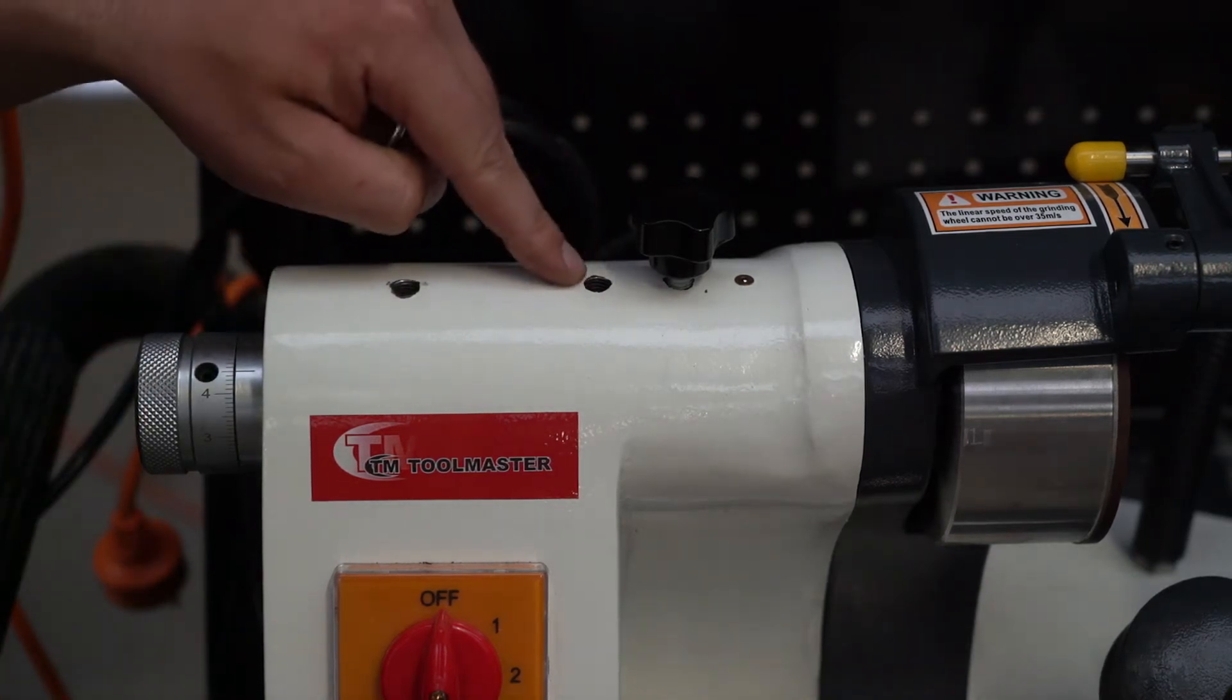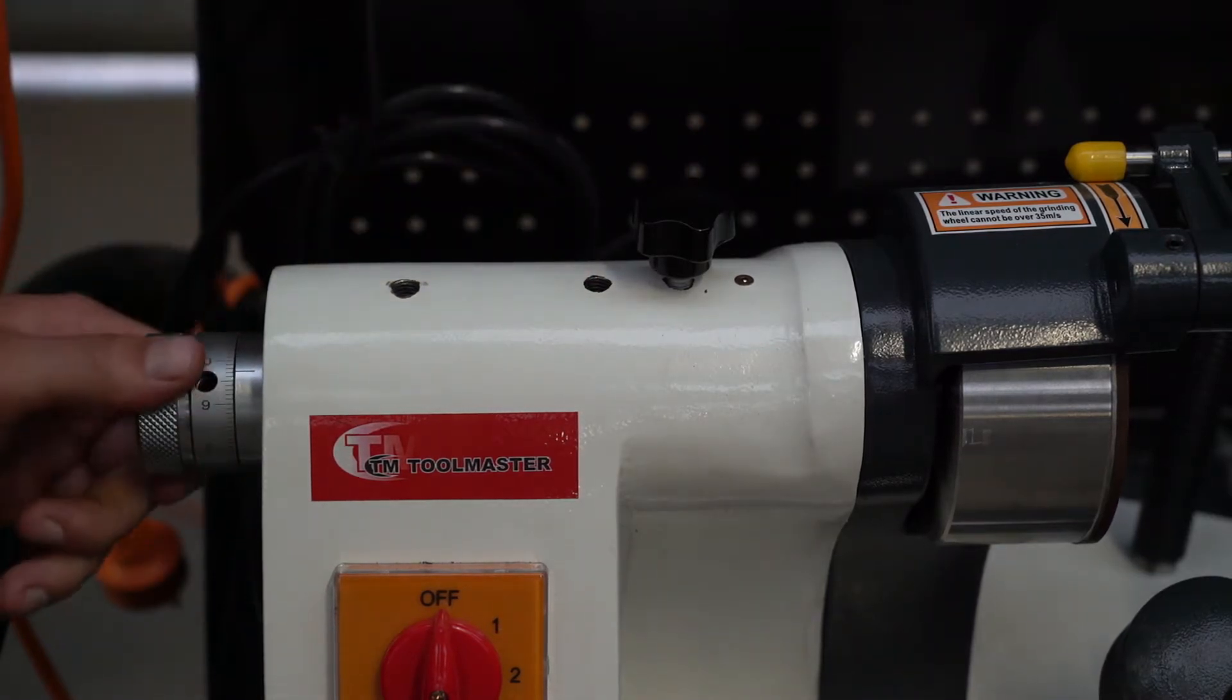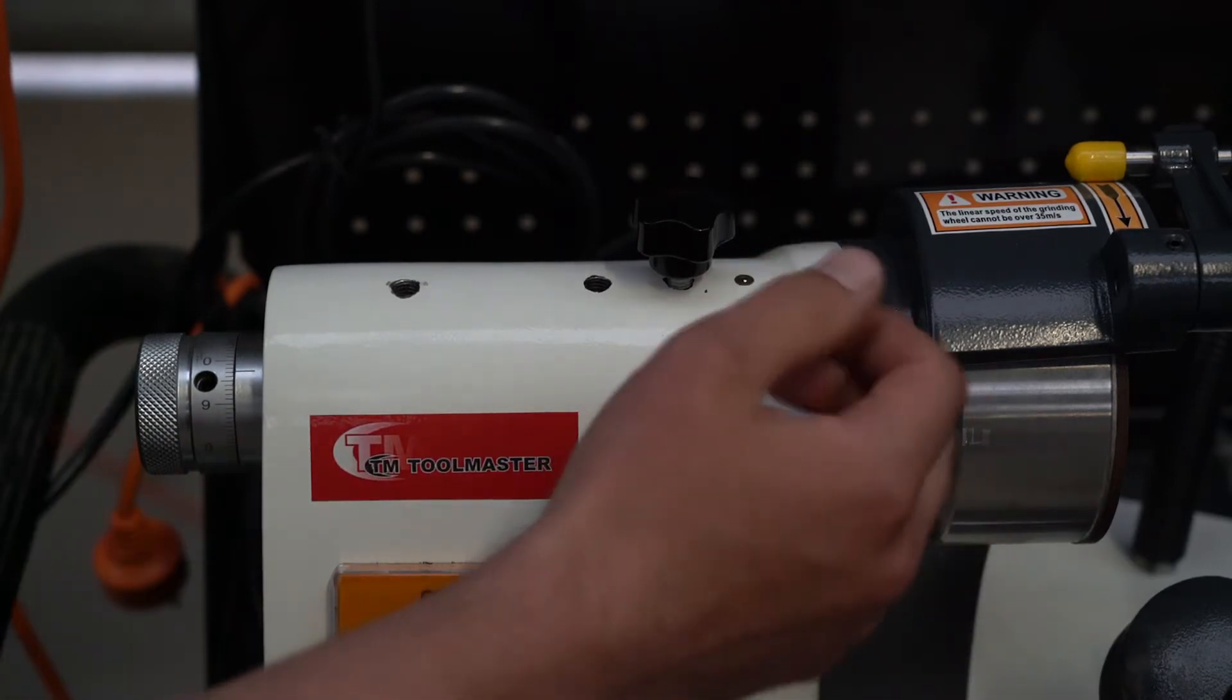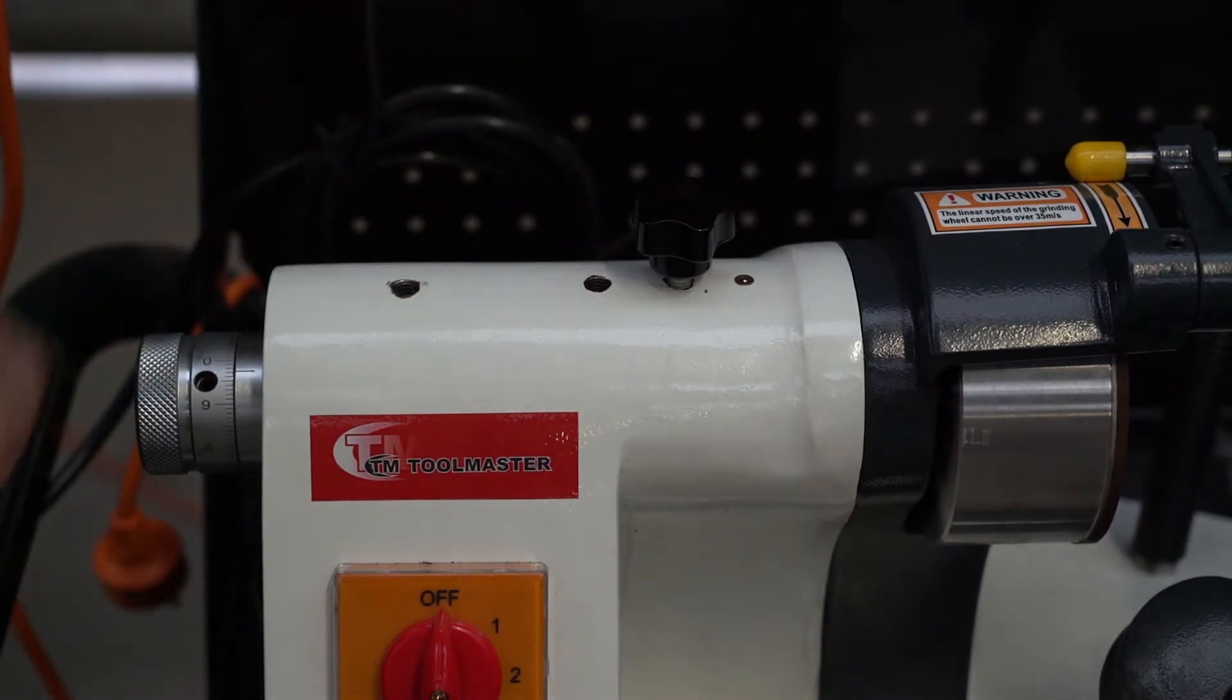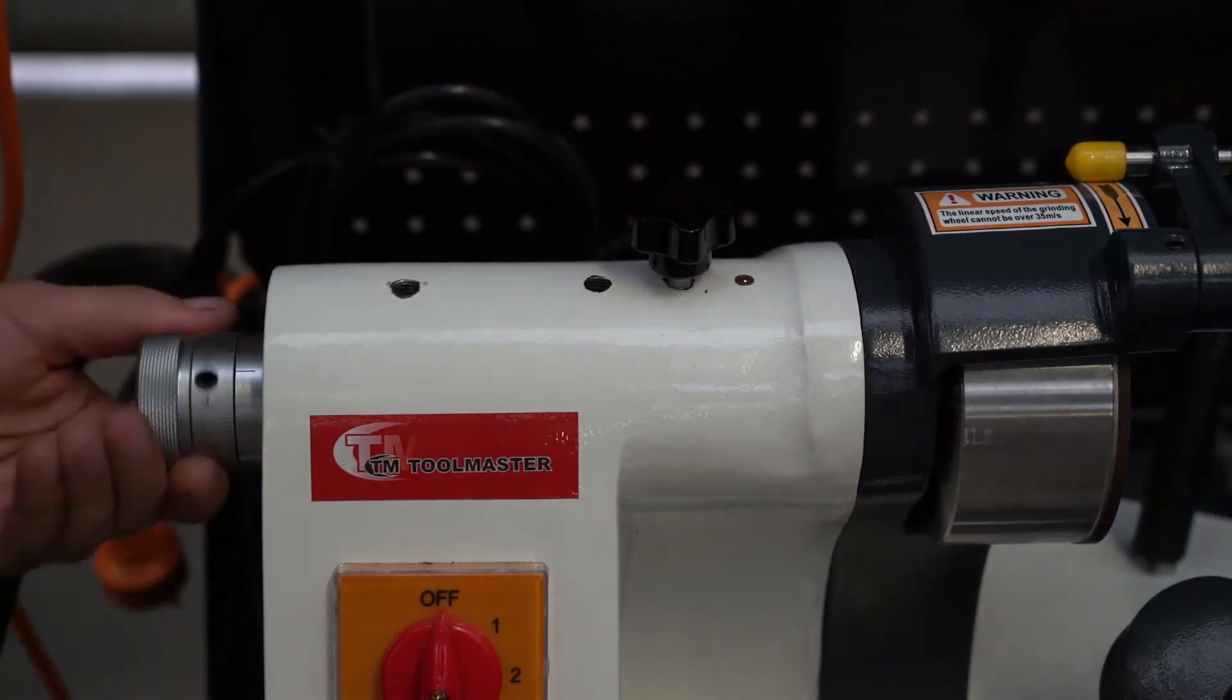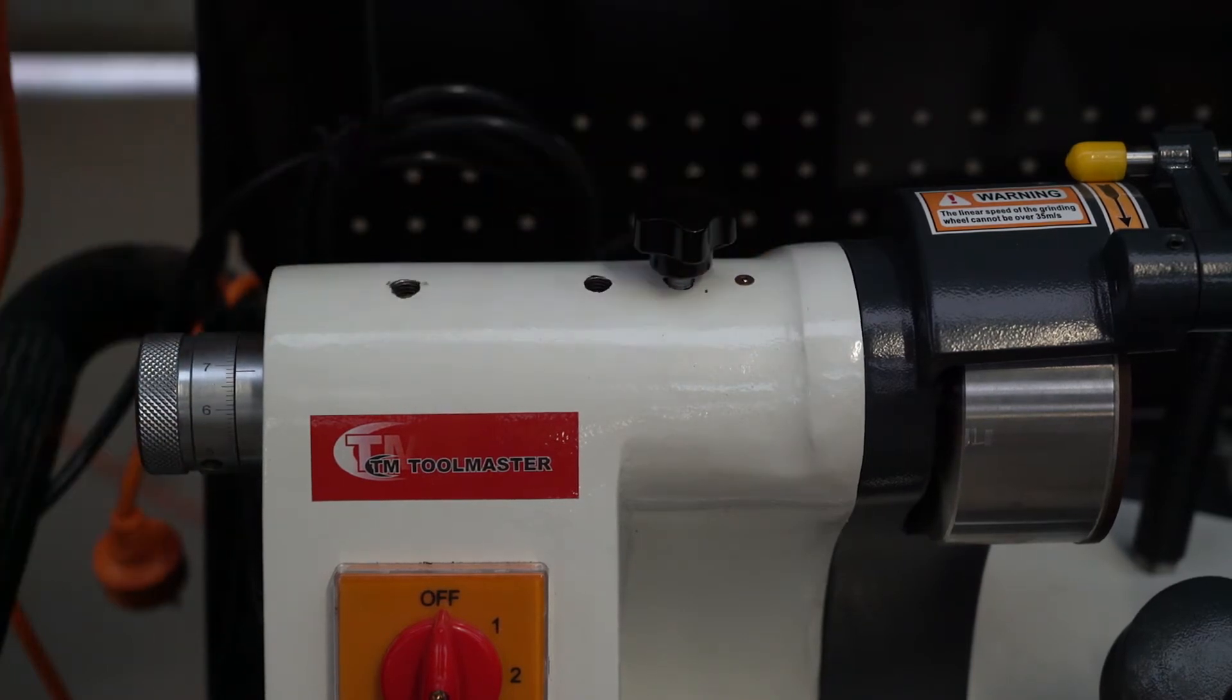In this hole there is a set screw which basically stops you from winding out the diamond wheel too far and making it contact this guard. So you shouldn't touch that. It's set at the factory. This knob here is basically just to lock this movement from side to side. I've never really locked it, never really used it.